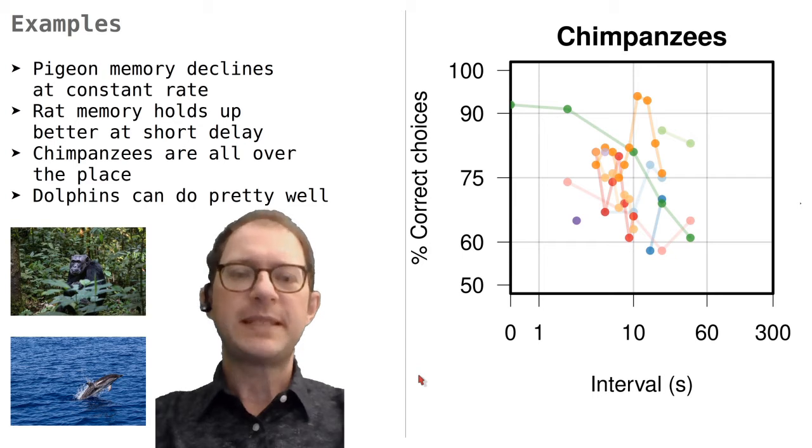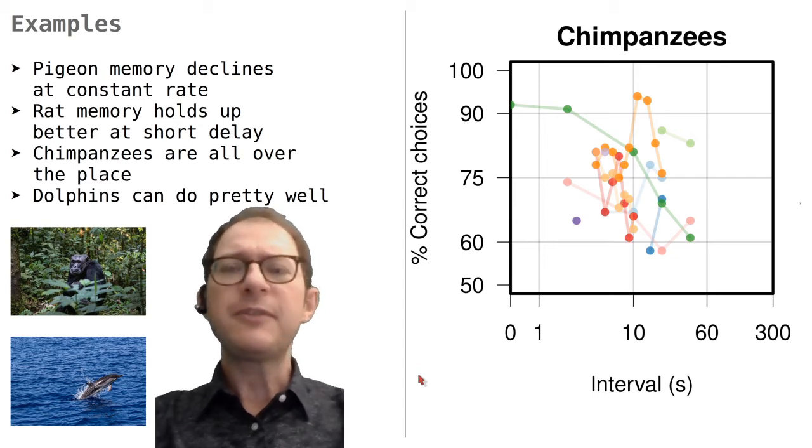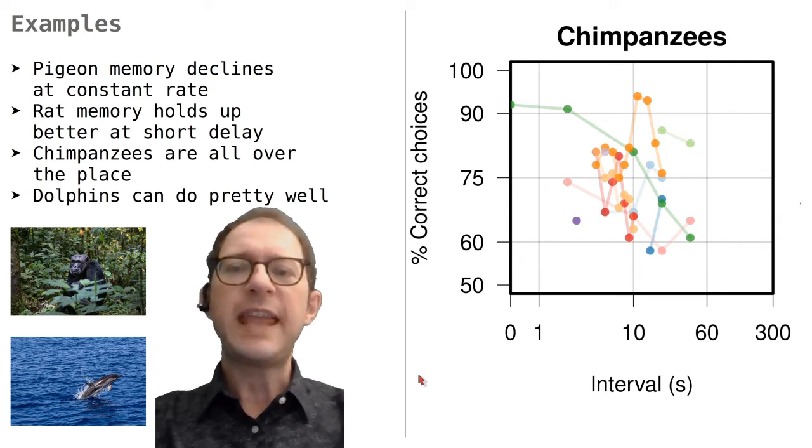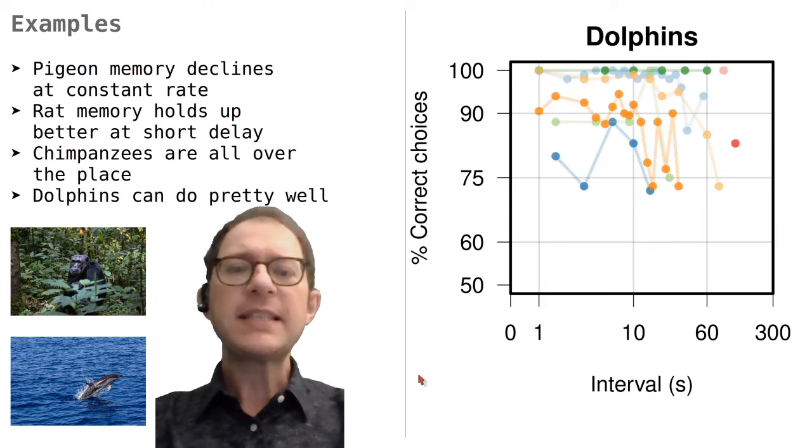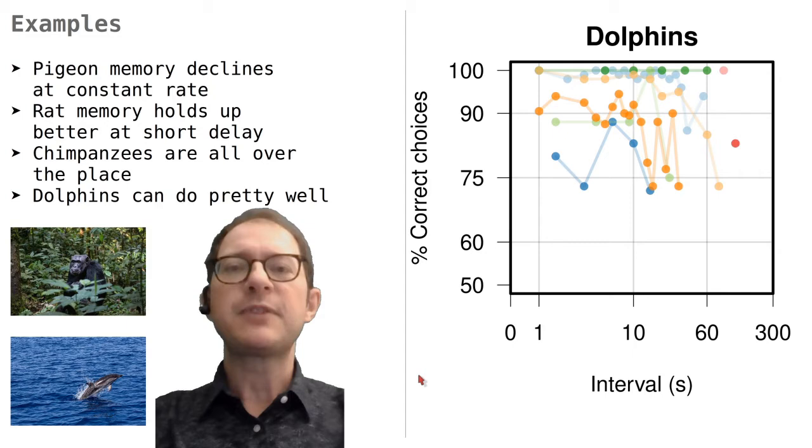These data are from chimpanzees. They are kind of all over the place, with some studies showing a very poor memory of about 10 seconds, and other studies showing a few minutes of memory, or at least very little decay within a few minutes. We will see shortly how to interpret this fact. Our last example is from dolphins. It shows that they can do pretty well, keeping things in mind for a few minutes, but the data is almost as noisy as for the chimpanzees.